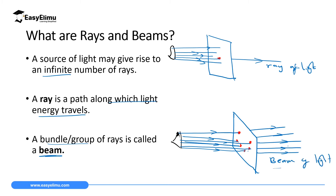So a beam is a collection of rays. When it's one, it's a ray; when there are many, it's a beam. A ray is a path followed by light energy, and a beam is a collection of rays.